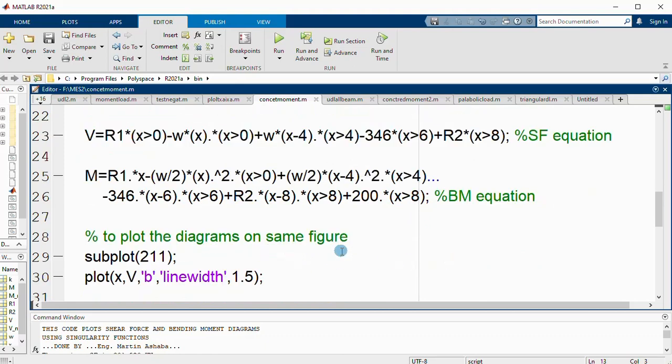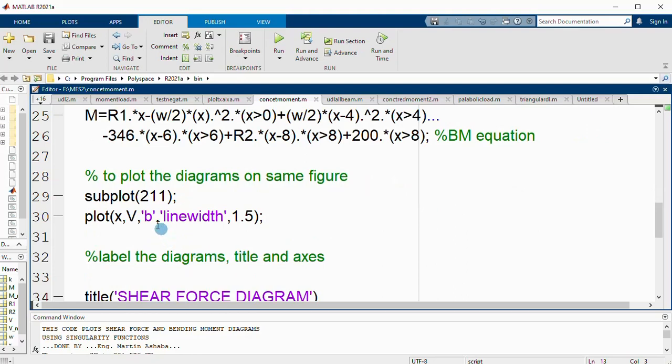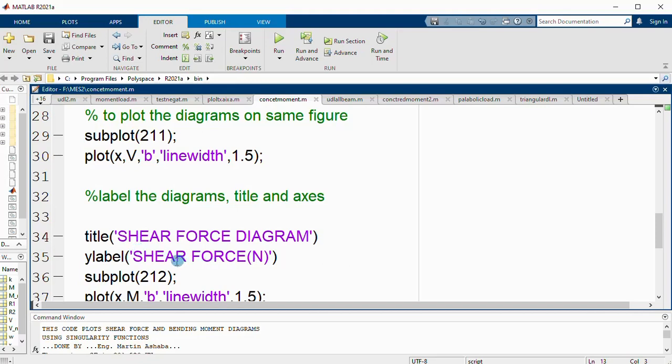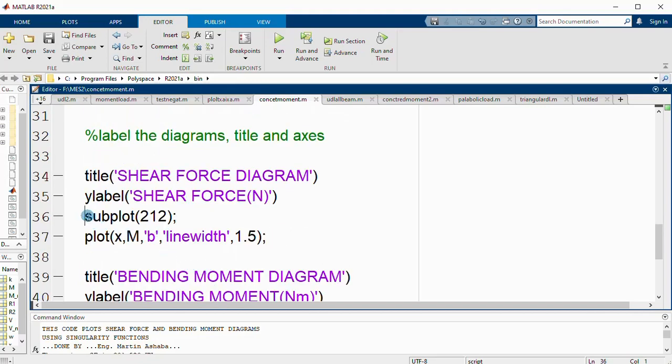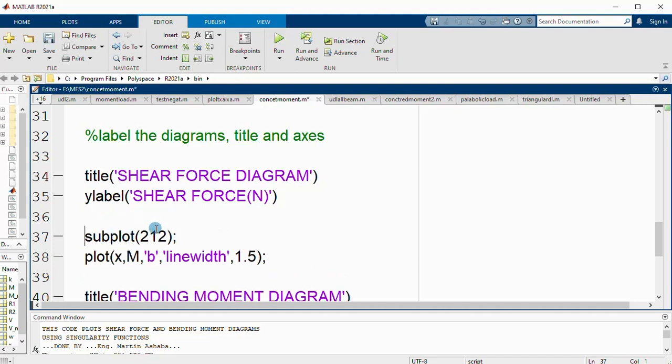This is the bending moment equation. We have to plot these two, the shear force and bending moment, on the same figure with the command subplot. Here I'm going to plot a figure of 2 by 1, two rows and one column. The shear force diagram will occupy the first position. It will be blue with line width 1.5. I'm trying to make the line width higher than normal. Then we need to give the title and label the axis.